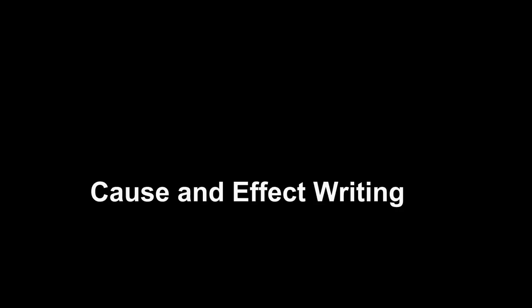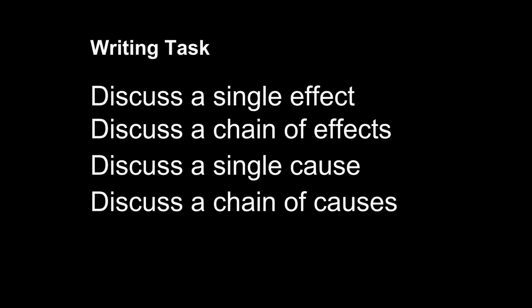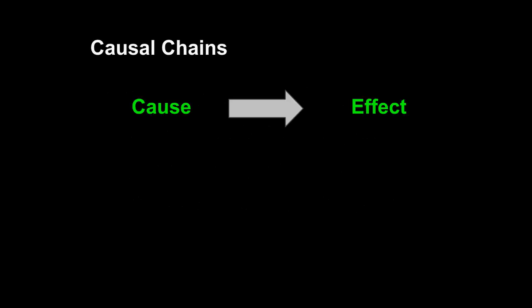Today we will explore cause and effect writing. This is the fourth video on this writing topic. If you have not seen the first videos, you may wish to review them. In cause and effect writing, you may be asked to discuss a single effect, a chain, a single cause, or a chain of causes. The cause and effect relationship breaks down into two distinct categories. The first is a simple cause and effect relationship — a one-to-one — meaning one cause leads to one effect, and you would only discuss two important details at most. This simple task is relatively rare in writing paragraphs. Your teacher usually wants you to explore a more complex relationship, such as the one we're discussing today.